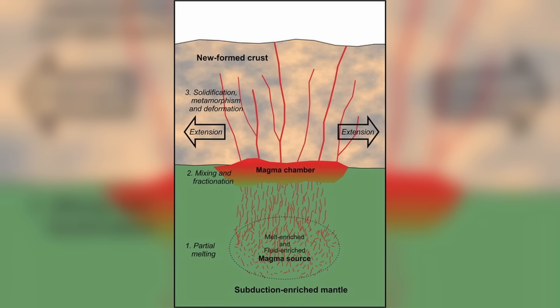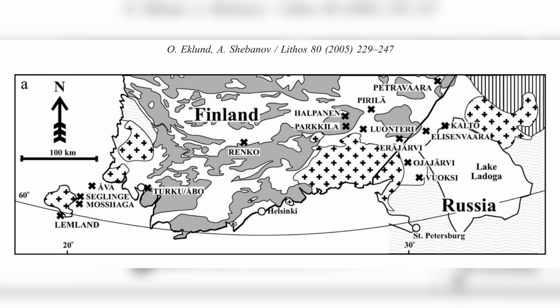After the orogeny, from around 1.81 to 1.77 billion years ago, we saw the crust extending instead of thickening. This extension created a period of magmatism. It is this magmatism which formed many of these features in southern Finland and the Åland Islands. There are actually two different processes which formed different rings. This first period of magmatism created 14 of these ring features spanning across a lot of southern Finland, not just the Åland Archipelago.